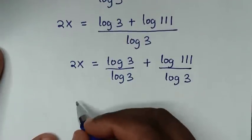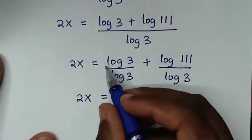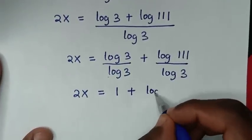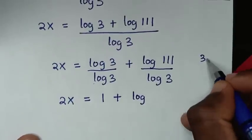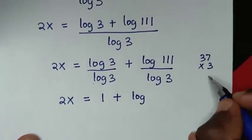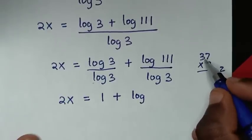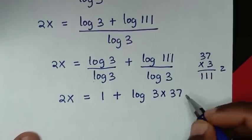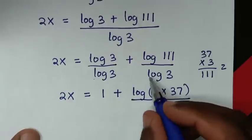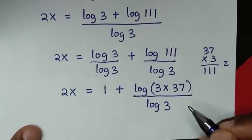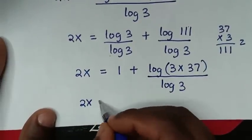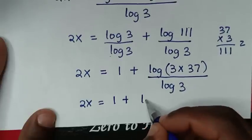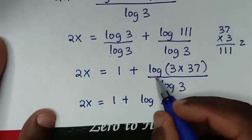Then it will be 2x is equal to log of 3 divided by log of 3, which is 1, plus log of 111. Now 111 is the same as 3 times 37, so log of 111 becomes log of 3 times 37, which is log of 3 plus log of 37, all over log of 3.